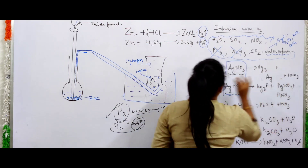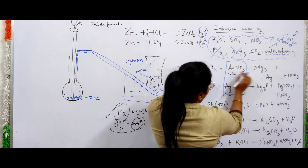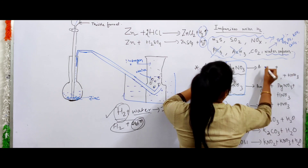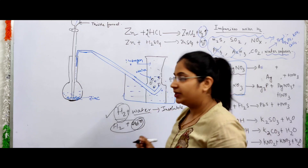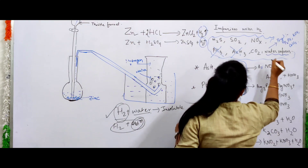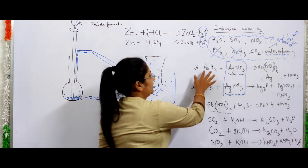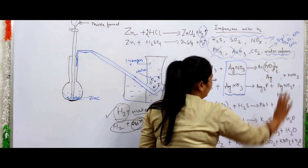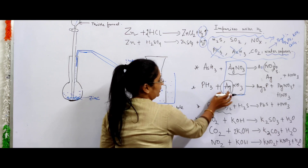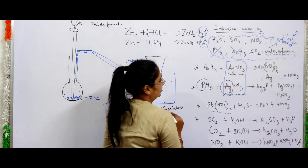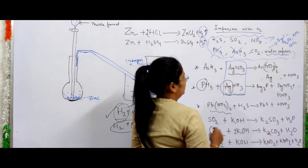Using silver nitrate, we can form a silver-arsenic complex. Arsenic nitrate compound — As(NO3)3 — is formed. So arsenic nitrate compound is produced from arsenic hydride reacting with silver nitrate, removing the arsenic hydride impurity.